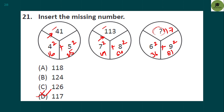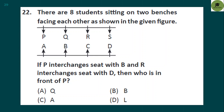Question 22: there are eight students sitting on two benches facing each other — PQRS and ABCD. P interchanges seat with B, and R interchanges seat with D. After the interchange, who is in front of P? P is now where B was, and B is where P was. After the swap, the person in front of P is Q. So option A is the correct answer.